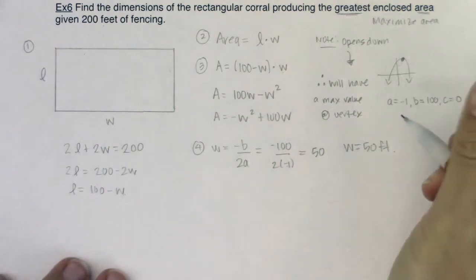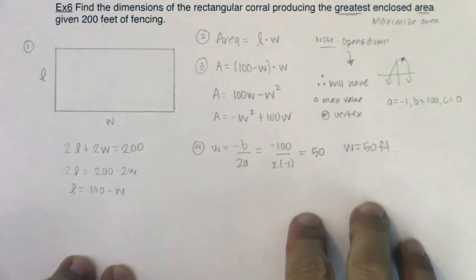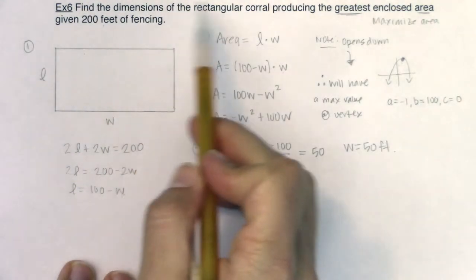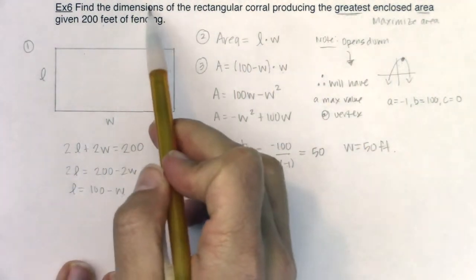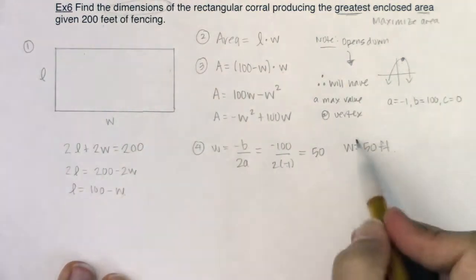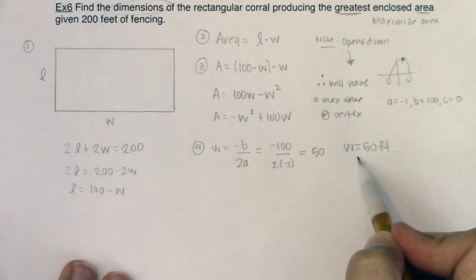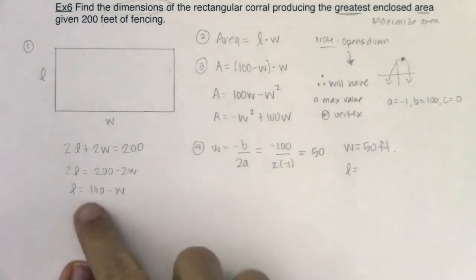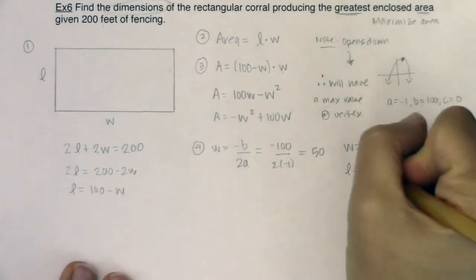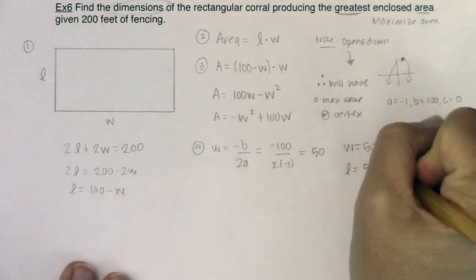I'm going to hang tight here and reread the question. It says, find the dimensions of the rectangular corral producing the greatest enclosed area. So when I want to find the dimensions, I need the width and the length. If I want to find the length, I will plug 50 right back in here. The length will be 100 minus that W, and that would be 100 minus 50. So the length will also be 50.